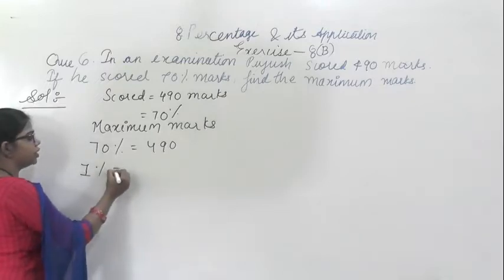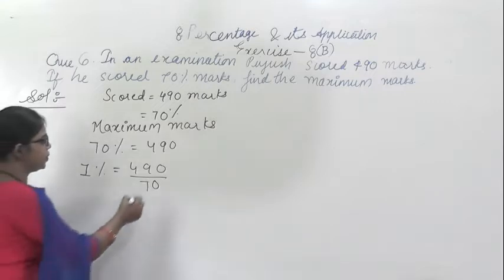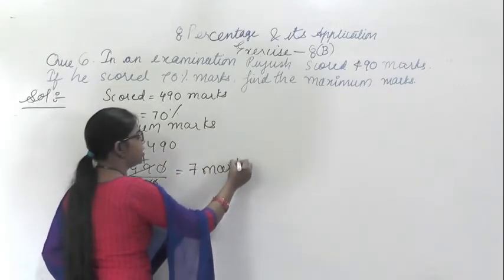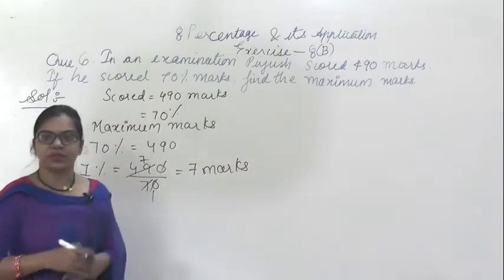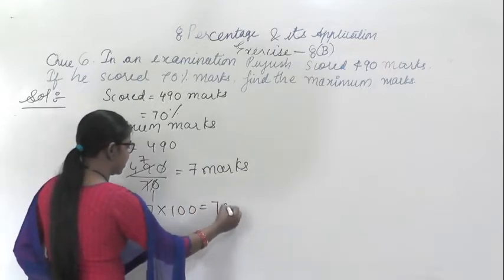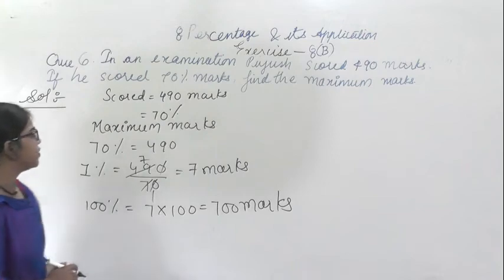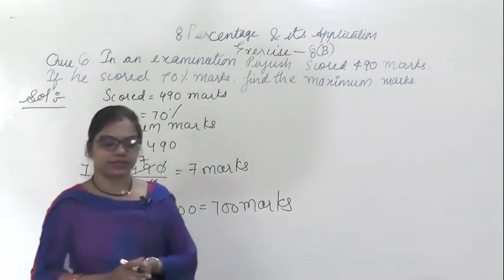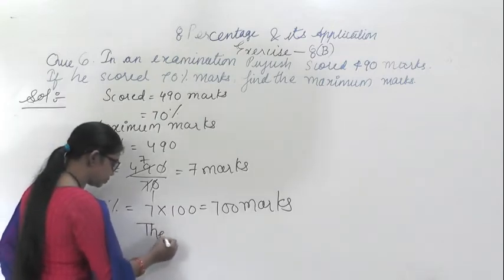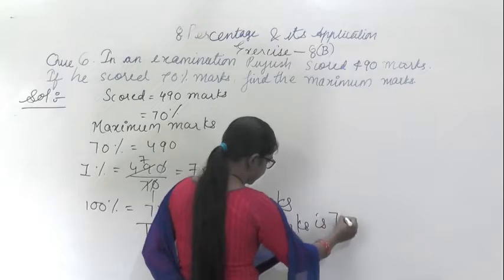To find 1%, it will be 490 divided by 70. The zeros cancel, and 490 divided by 70 gives 7 marks. So 1% is equal to 7 marks. For 100%, he will score 7 into 100, which is 700 marks. So the maximum marks is 700. This is the answer.